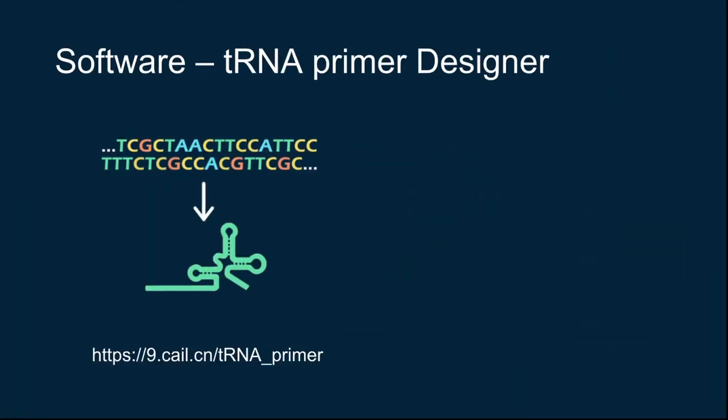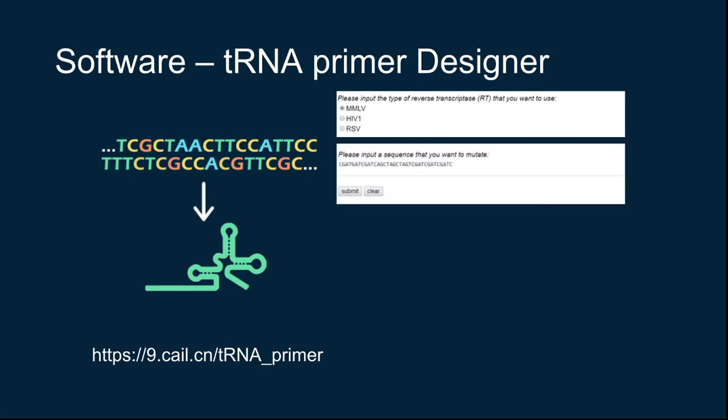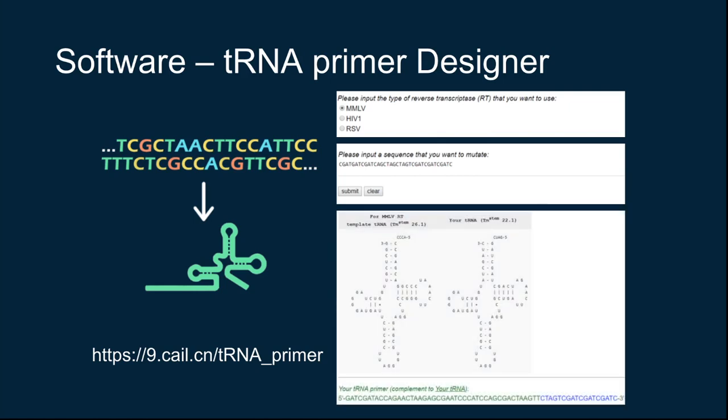tRNA primer designer is our software. It outputs self-tailored tRNA primer for the user's specific target sequence. Our software is very easy to use. First, the user should select the reverse transcriptase they are using. Then, input the target sequence and click submit. The system will function automatically and output the designed tRNA primer including both its cloverleaf structure and the corresponding sequences. The designed tRNA primer could also be used in eukaryotic experiments.